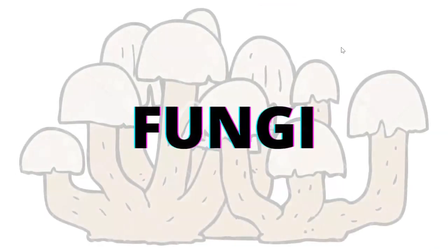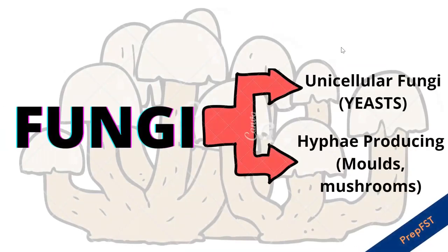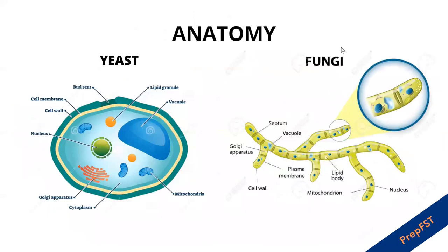Let's come to the next organism, which is fungi. There are two types of fungi important in foods: unicellular fungi also known as yeast, and hyphae-producing fungi known as mold. In the given two structures you can study the basic morphology of both yeast and fungi visible under the light microscope. This slide shows the detailed anatomy of both cells using an electronic microscope.